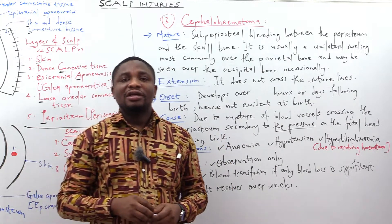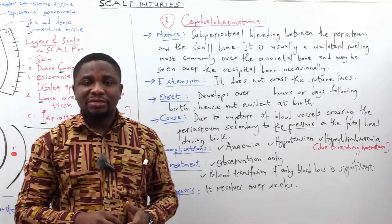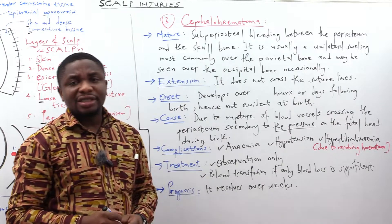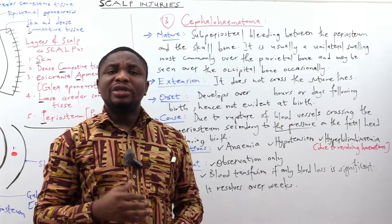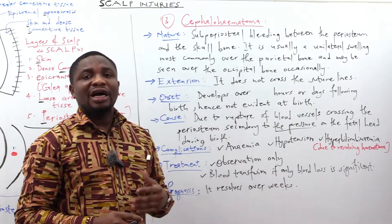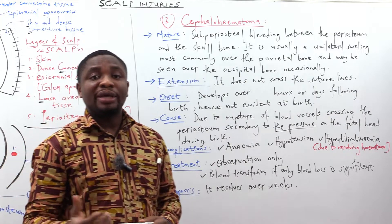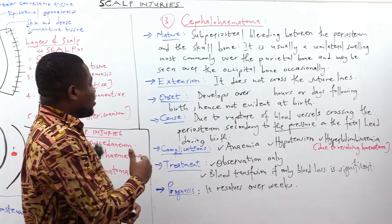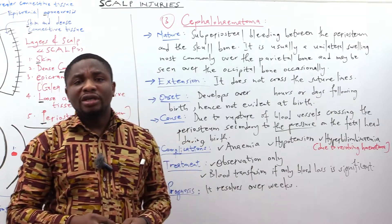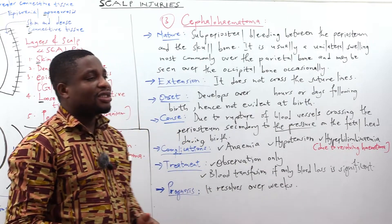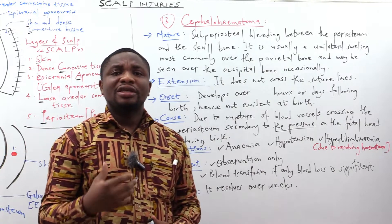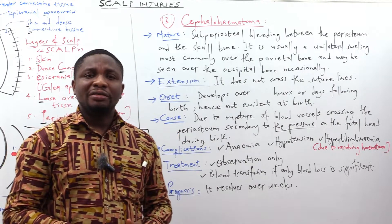Prolonged labor and macrosomia are other risk factors for cephalohematoma. Complications include anemia, hypotension, and hyperbilirubinemia due to hemolysis of red blood cells. Treatment is solely observation, but in cases of severe anemia or hypotension, blood transfusion may be necessary.